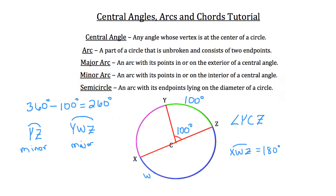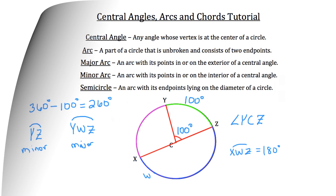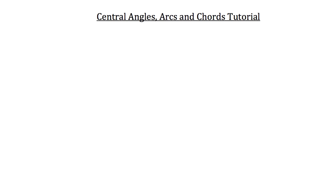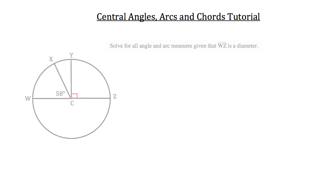Now let's do a practice problem so you can apply what you've just learned. In this problem, I'd like you to solve for all angle and arc measures given that W, Z is the diameter of this circle. Let's look at the information that's been presented.